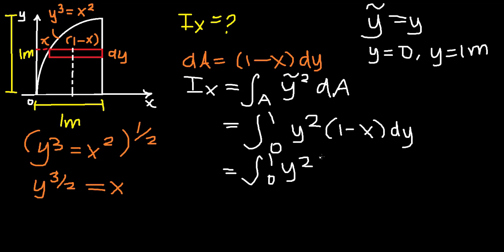So we get the integral from 0 to 1 of y²(1-y^(2/3)) dy. Then let's distribute our y²: y² multiplied by 1 is y², minus y² times y^(2/3).